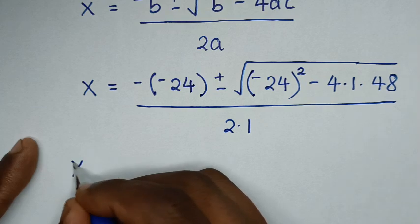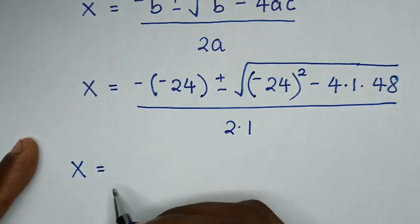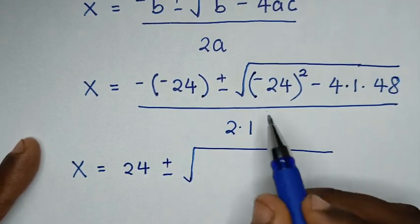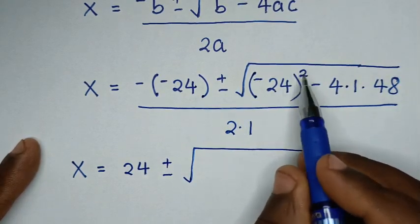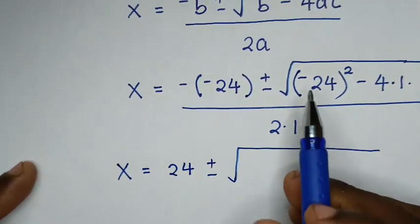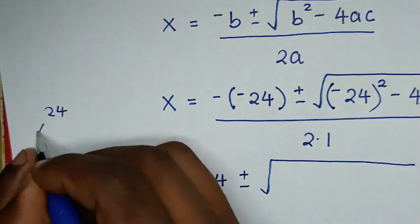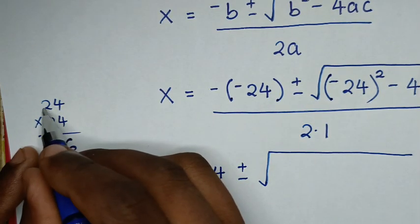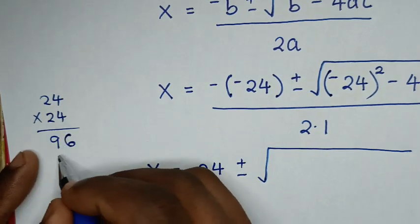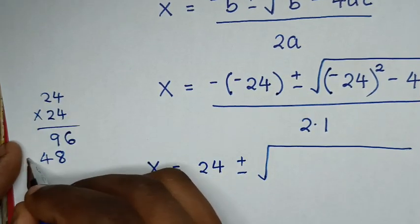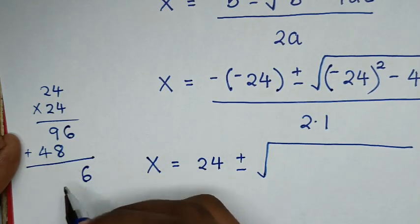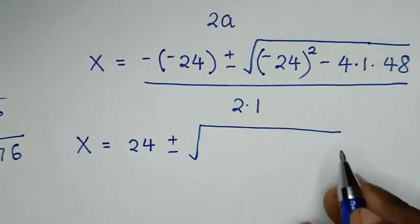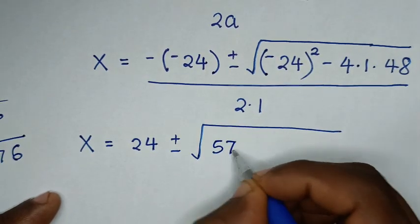Then it will be x is equal to negative of negative 24, it is positive 24, plus or minus square root of negative 24 squared. So minus times minus is positive, so it will be 24 times 24. Here 24 squared is 576.